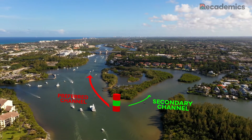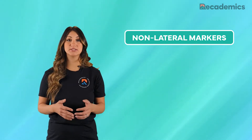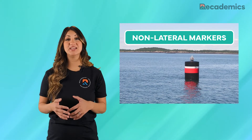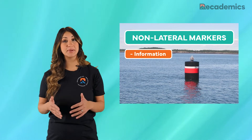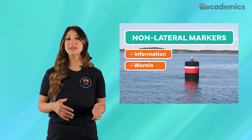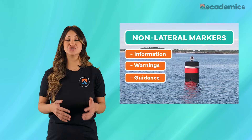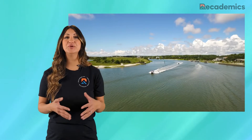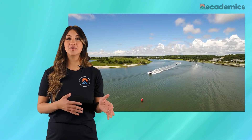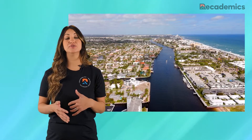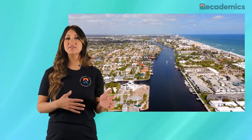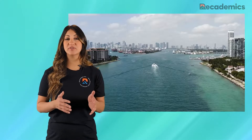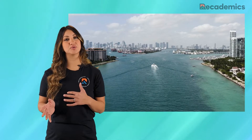To complement the lateral marker system, we have the non-lateral marker system. This system has a variety of buoys and beacons that provide information, warnings, and guidance beyond the red and green channel markers found on the lateral system. As a general rule of thumb, you'll find the lateral and non-lateral systems are used closer to open water — in well-defined channels, rivers, harbors, and the Intracoastal Waterway, for example.